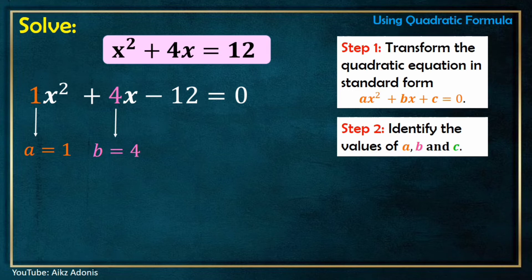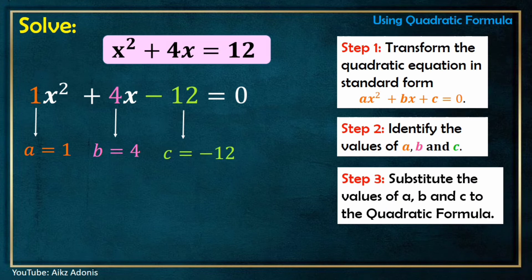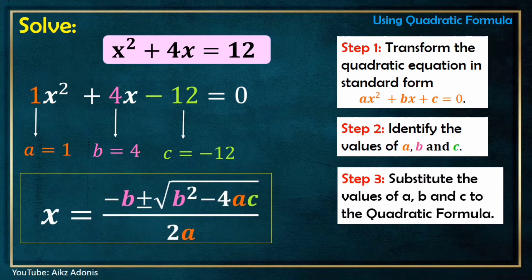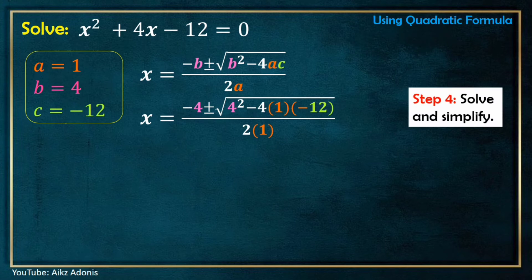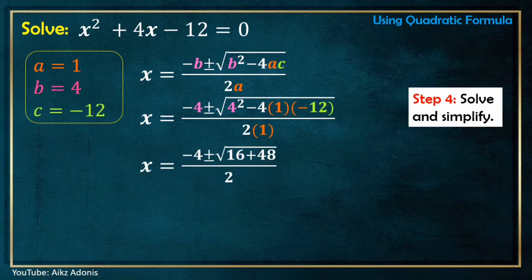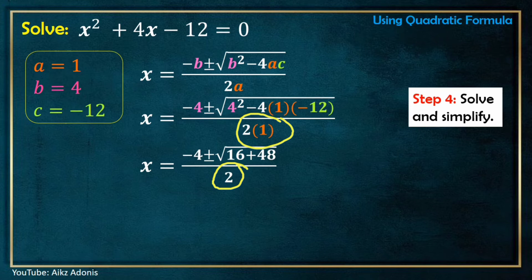b is equal to 4. And c is negative 12. As you can see, you will just substitute a, b, and c in the formula, and the rest you will just copy. Now let's start substituting the values of a, b, and c in this formula. Step 4: Solve and simplify. By simplifying this formula, we have x equals negative 4 plus or minus the square root of 16 plus 48, all over 2. 16 is found by squaring 4, and 48 is found by multiplying negative 4 times 1 times negative 12. The denominator 2 is found by multiplying 2 and 1.